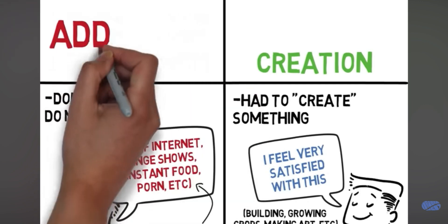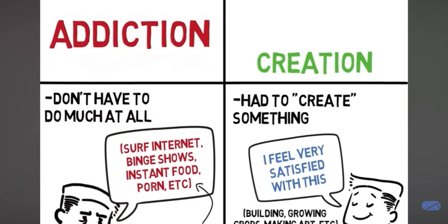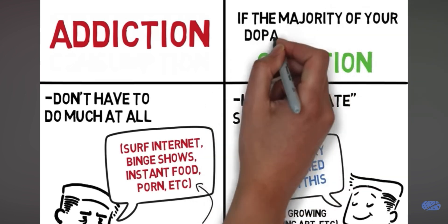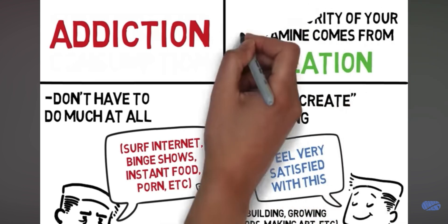You're addicted to watching TV. You're addicted to smoking cigarettes. You're addicted to eating junk food. But on the other hand, if we get the majority of our dopamine from a form of creation, that's called a passion.